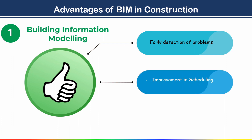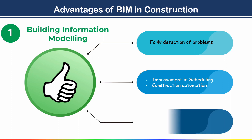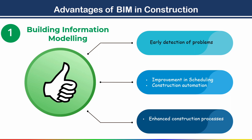The next advantage is improvement in scheduling. Project elements can be sequenced more efficiently using intelligent modeling, enabling the possibility for systematic scheduling. The next advantage is construction automation — tasks that can be easily automated are identified. The next advantage is enhanced construction processes. Workflows are automatically generated by BIM software, and any changes made during construction automatically update the process for everyone on site.